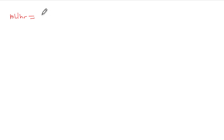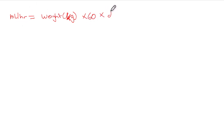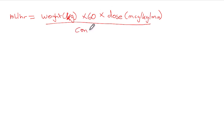Now for inotropes, here is the formula. To find your mils per hour for an inotrope infusion: mils per hour = (Weight in kg × 60 × Dose in micrograms per kg per minute) divided by the Concentration of your fluid in micrograms per mil. The 60 represents one hour, since you are running the infusion per hour.